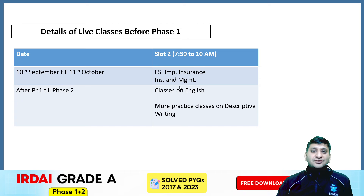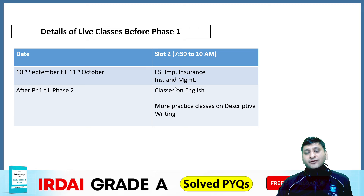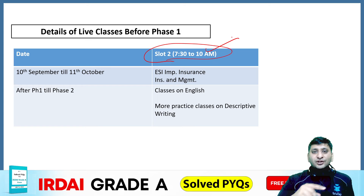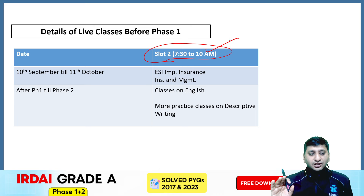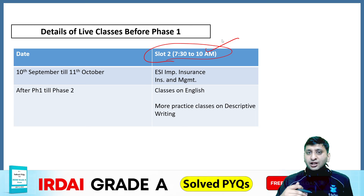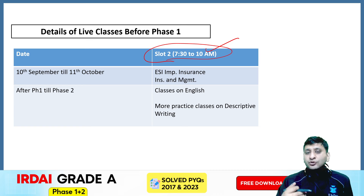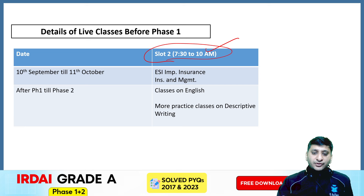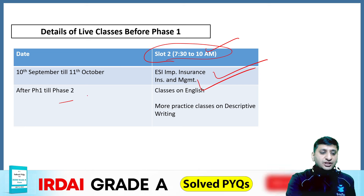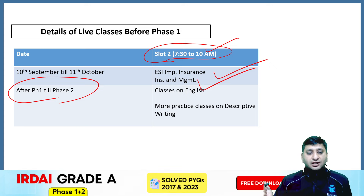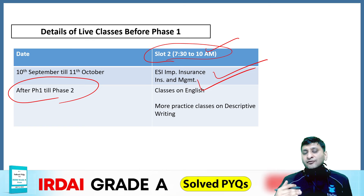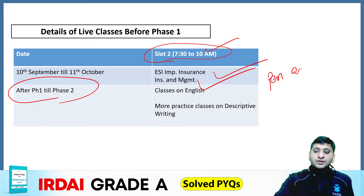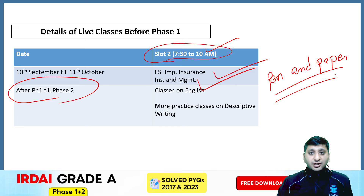The live classes schedule: our live classes for phase 2 are starting from 10th September. We have to start now — waiting until after phase 1 would be too late. The classes will be from 10:30 to 11:00 AM. This is the morning slot — slot 2 — because in the evening slot 1, we are studying phase 1 which is not part of this course. Working people can join in the morning, and if you would be getting late for office by 9:00, you can also watch the recorded version. Until 11th October, we will complete ESI Impacting Insurance and Management. After that, we will do more classes to practice more descriptive answers, which are very necessary. This will be pen and paper based — you should use graphs, handwriting, and flow charts.